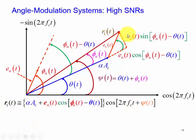We can approximate the resultant vector since alpha Ac is a lot larger than e of nt. Then this vector, r1 of t, our resultant, is essentially going to be very close to alpha Ac.